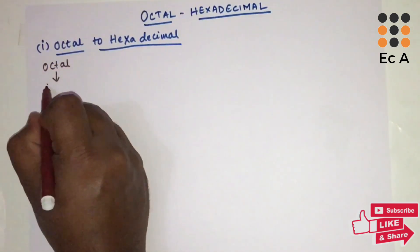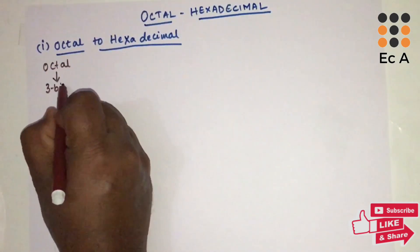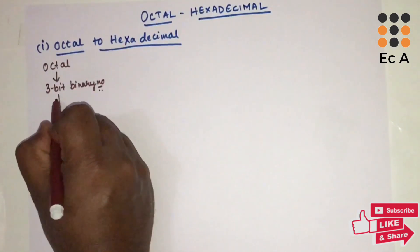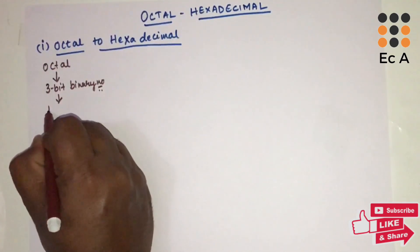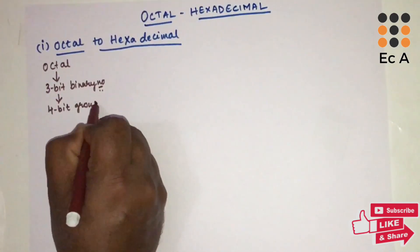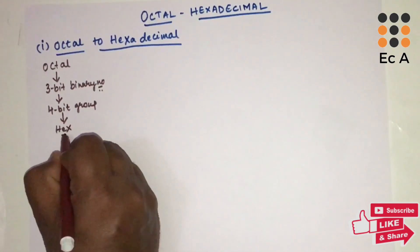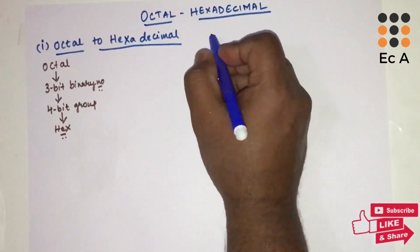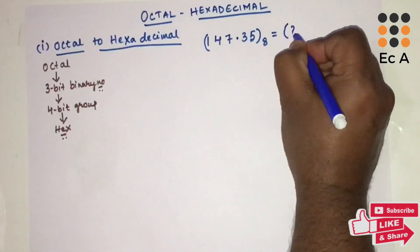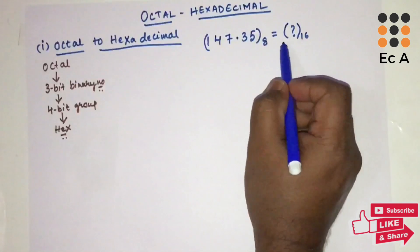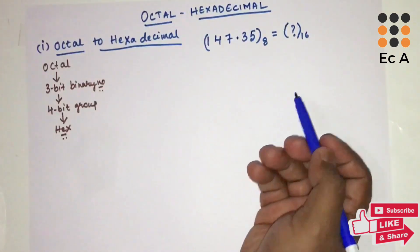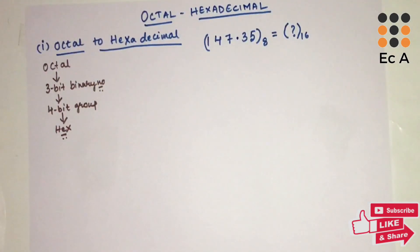The procedure for octal to hexadecimal conversion is: first take an octal number, then write the 3-bit equivalent binary number, then make a group of 4-bit numbers, then write the equivalent hexadecimal number. Directly we can't convert octal to hexadecimal, so we write the binary equivalent of the octal number, then convert that binary into hexadecimal.